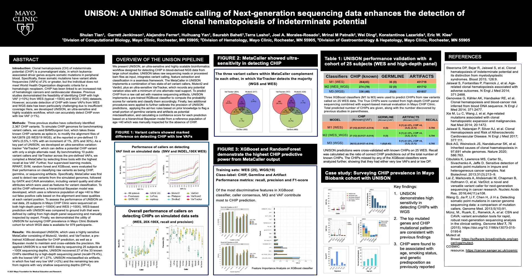So what is CHIP? CHIP represents a pre-malignant state in which leukemia-driver genes carry somatic mutations, but individuals who carry these somatic mutations are still not defined as having a hematological neoplasm. CHIP has been linked to an increased risk for developing blood cancer and cardiovascular disease.